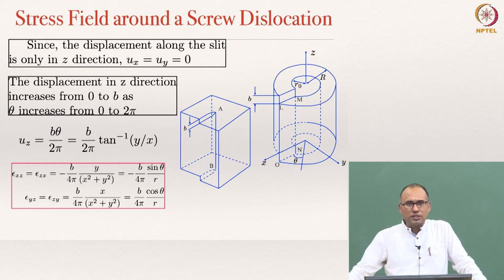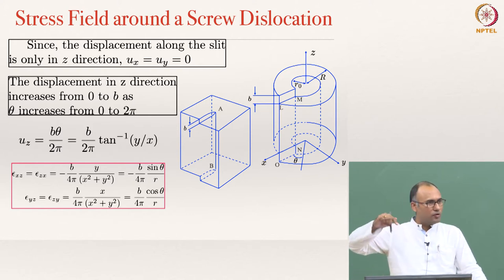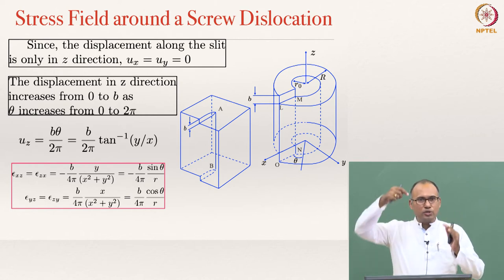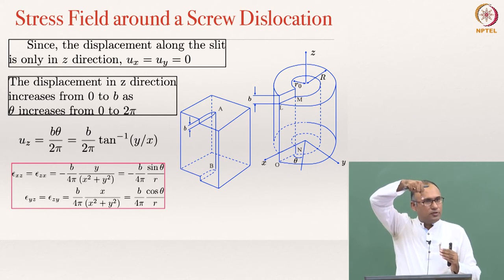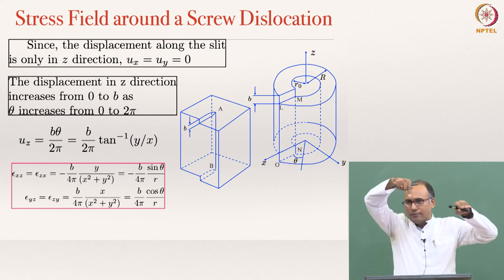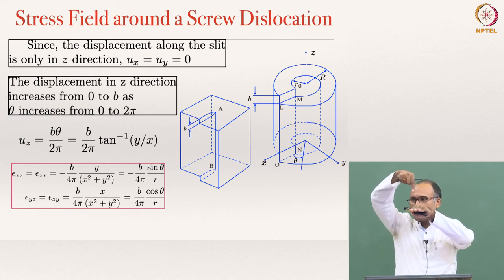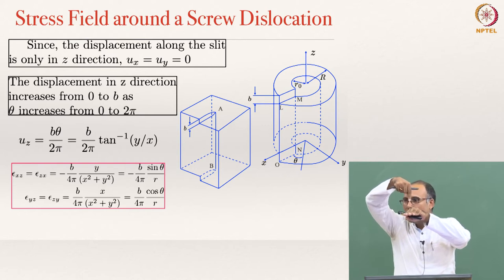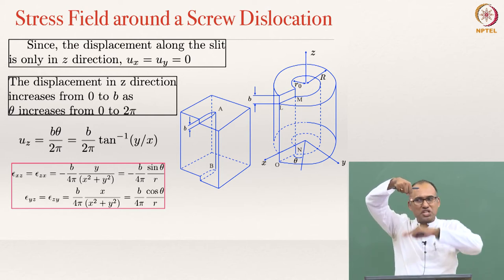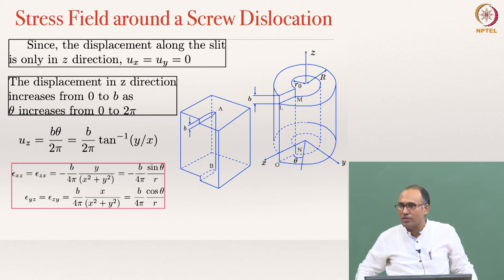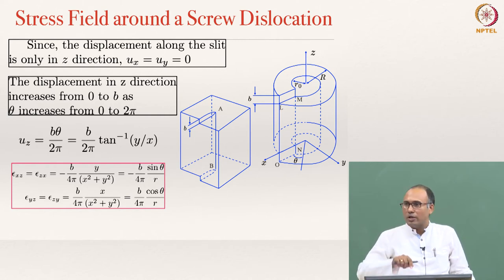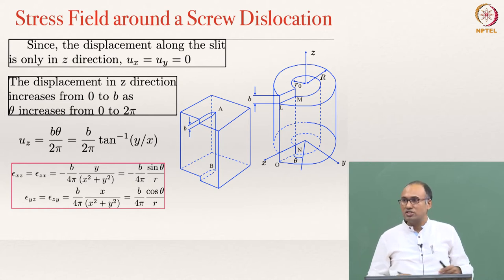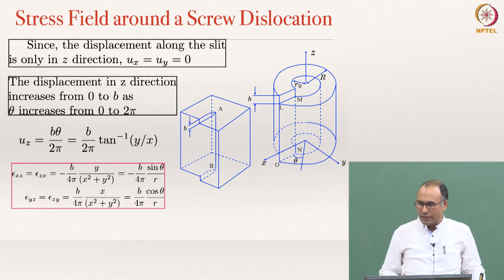Now, a brief note on the stress field around a dislocation. If you have a perfect crystal and you introduce a half plane, we have seen that above the slip plane, all the atoms around the dislocation experience compression, and all the atoms below the slip plane experience tension. The mere presence of the dislocation creates a local stress field, and how this stress state changes as a function of space around the dislocation core is what we will discuss.